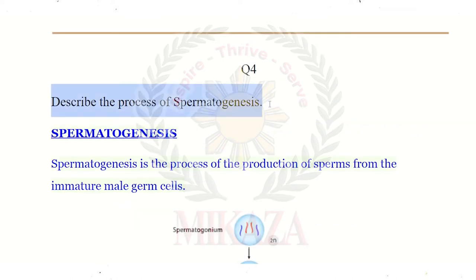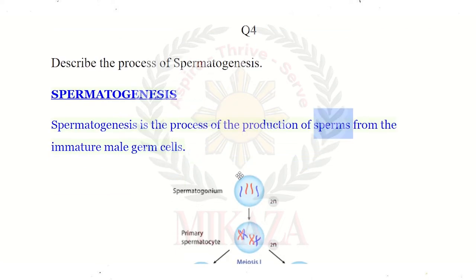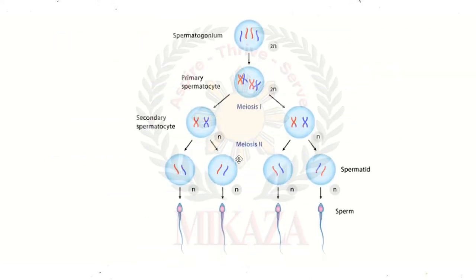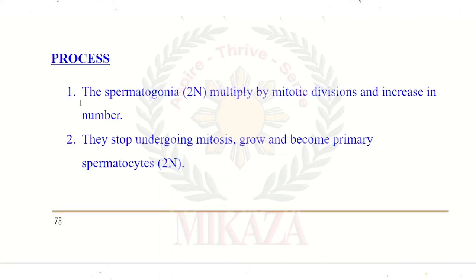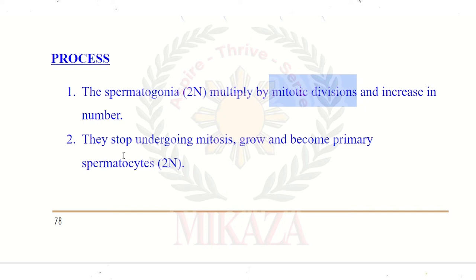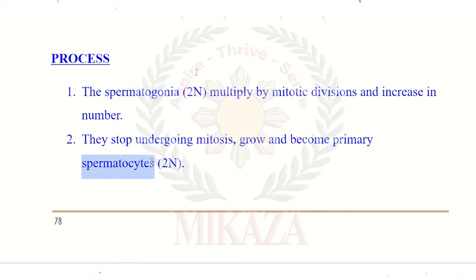Question number 4: describe the process of spermatogenesis. We need to explain how sperm is created. Spermatogenesis is the production of sperm, which are male cells. First, the spermatogonia have a diploid number and undergo mitosis, which increases their number. When mitosis is sufficiently complete, the mitosis process stops and the spermatogonia mature slightly — two cases are deployed.